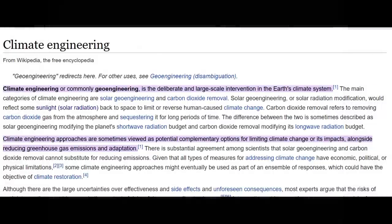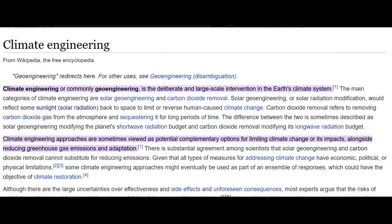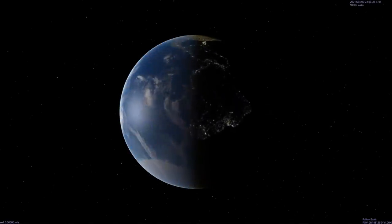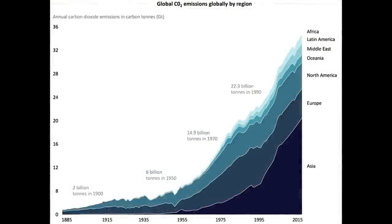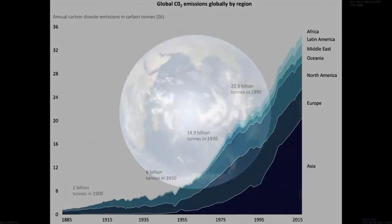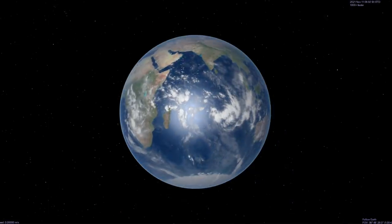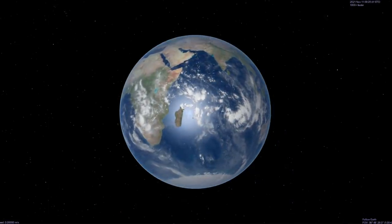Now, at this point, a lot of eco-people will start losing their minds using words like geoengineering. Well, again, yes and no. We have already geoengineered the planet. Unintentionally, as it turns out, but we've still geoengineered the planet. The question is, having unintentionally geoengineered it, can you intentionally de-geoengineer it?